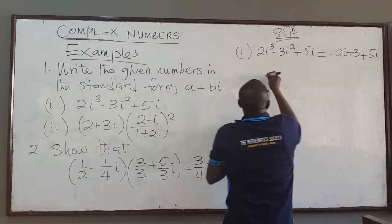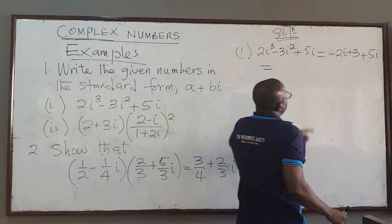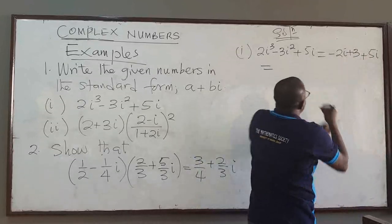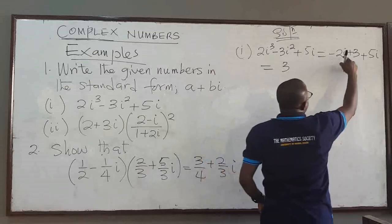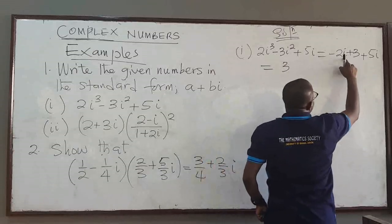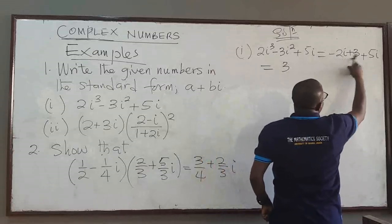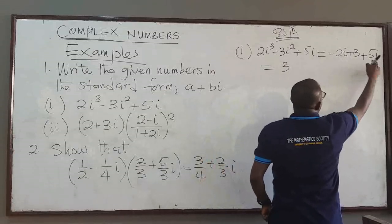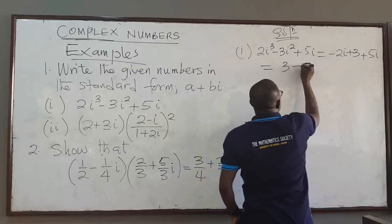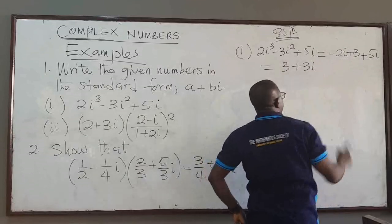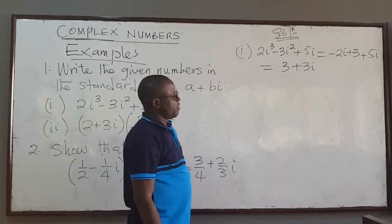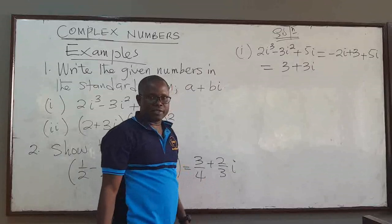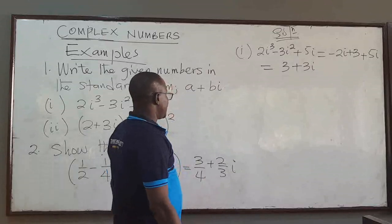So that is equal to: the real part is just 3, and the imaginary part will be negative 2i plus 5i, that would be 3i, so plus 3i. So we have put it in the standard form — that's easy and straightforward.